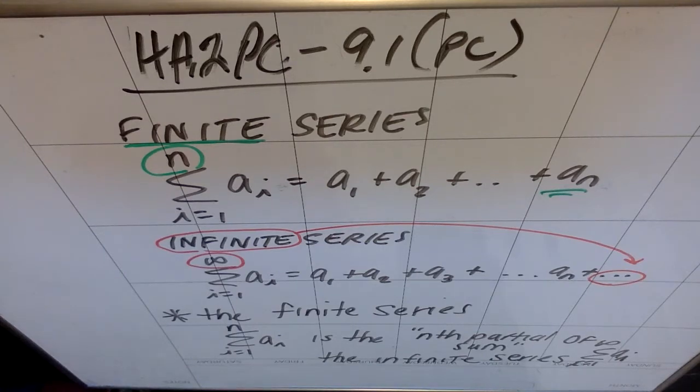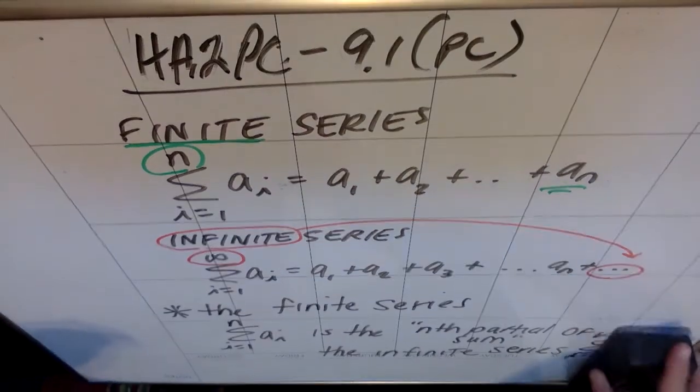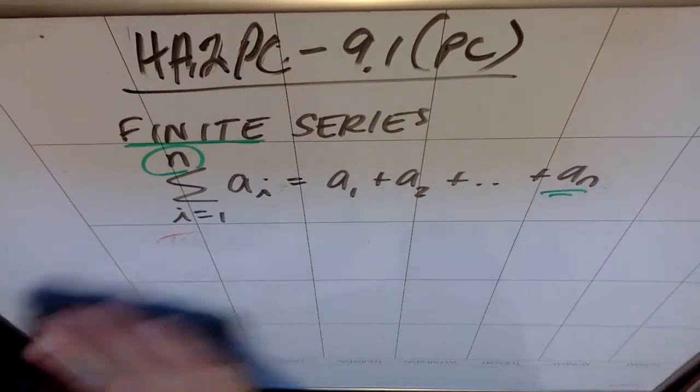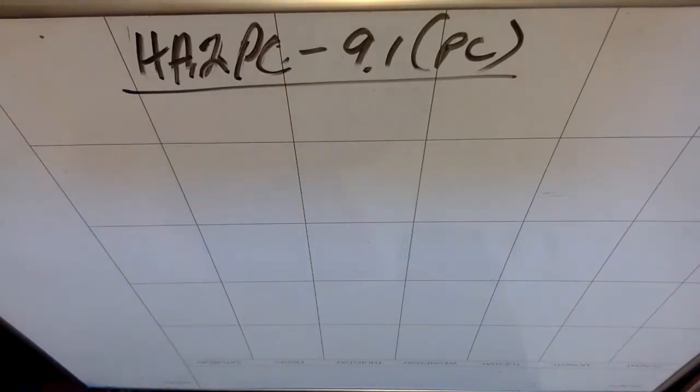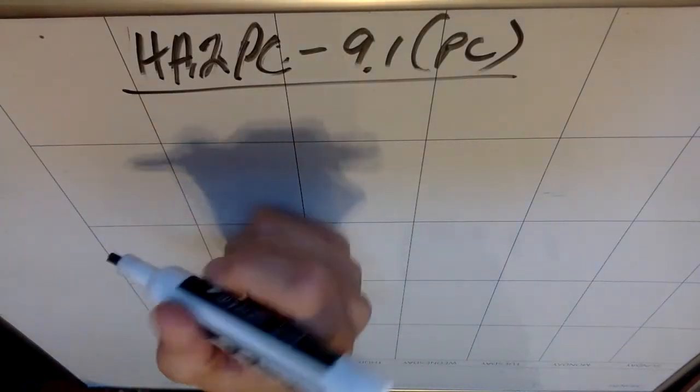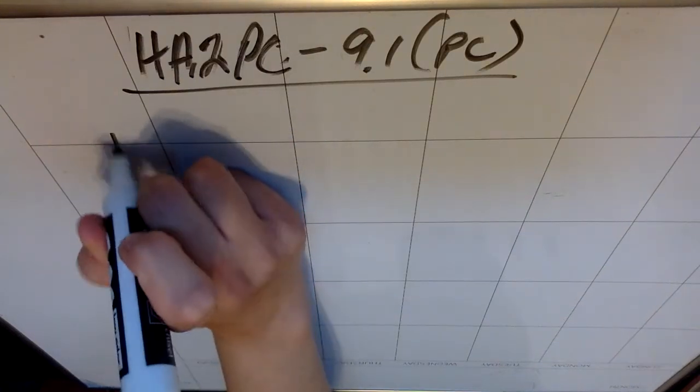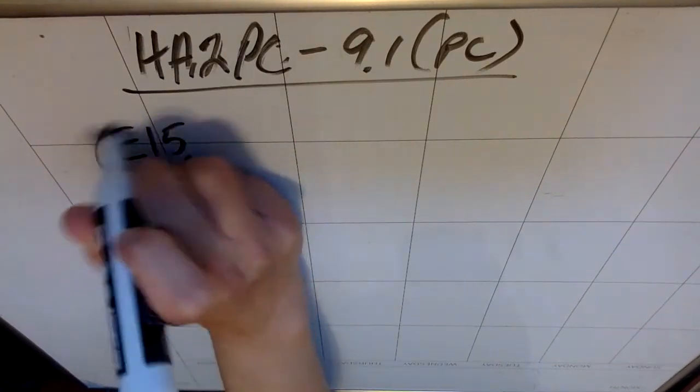So what we're going to do in our last little thing in this section before we move on to 9.2 is we're going to go ahead and talk about how to find the sum of a finite series. So let's actually look at example 15.